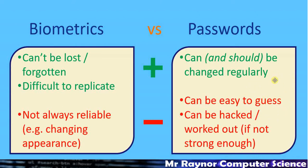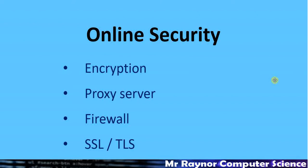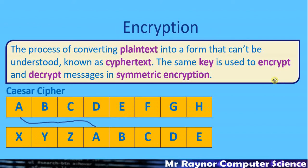Moving on, we'll look at some aspects of online security: encryption, proxy servers, firewalls, and then SSL and TLS. Encryption is the process of converting plain text into a form that can't be understood — scrambling up the text. Once encrypted, it's called ciphertext. Symmetric encryption is the only type covered in the IGCSE. Symmetric means the same on both sides: the same key is used to encrypt and decrypt the message.